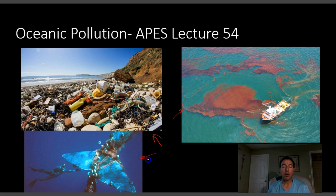This photo shows more trash, mostly from fishing nets that fishermen leave out in the ocean and lose, and so they get wrapped around marine organisms, birds, turtles, and in this case even whales.